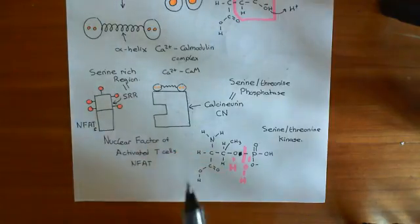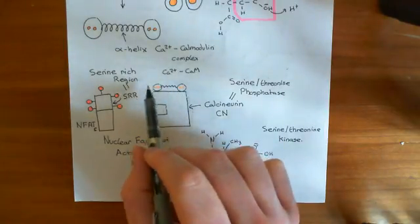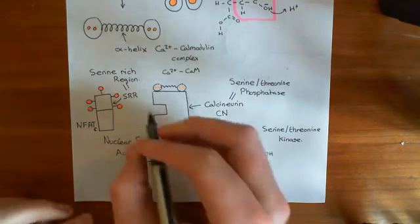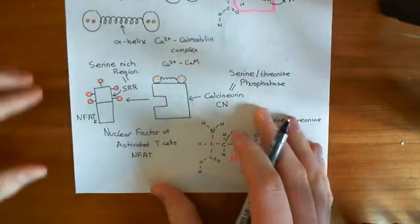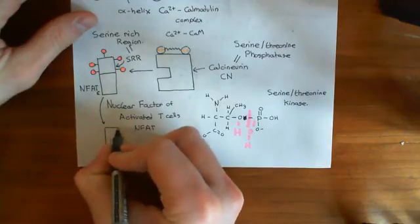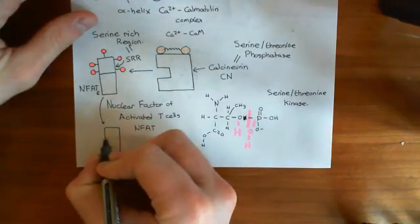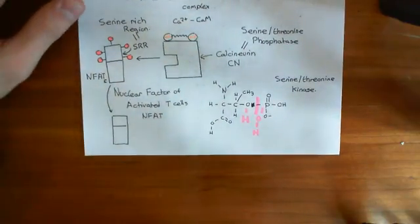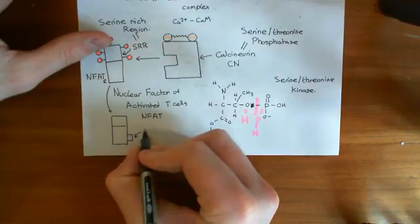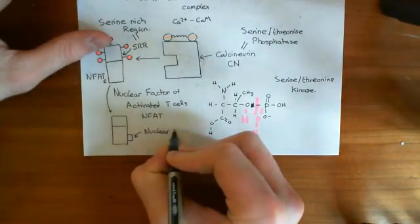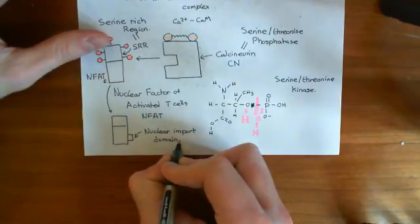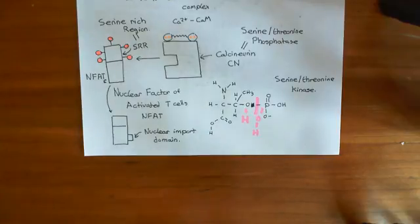When calcium goes up in the T-cell, it activates the calcium-calmodulin complex, which then activates the calcineurin enzyme, which cleaves phosphate groups off of serine residues. So calcineurin comes and breaks off these phosphate groups from the serine residues of the serine-rich region. This changes the conformation of NFAT so that a new domain — the nuclear import domain — becomes available, and this allows the protein to translocate to the nucleus.